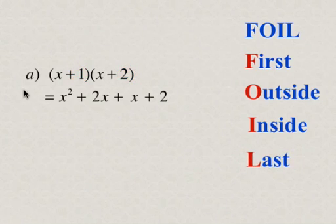So now, what we're going to do is combine any like terms. The only like terms we have here are the 2x and the x, so we're going to add those two to be 3x. We can't simplify any further because these are unlike terms. So our answer is x squared plus 3x plus 2.